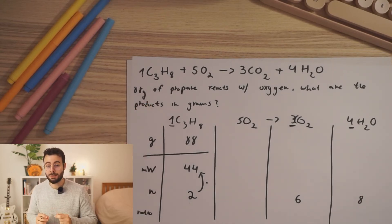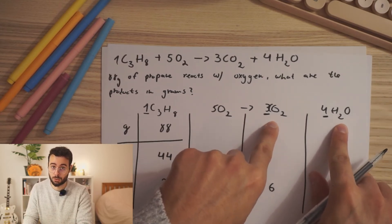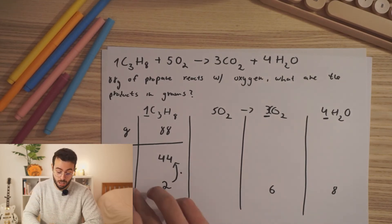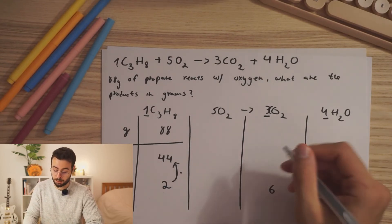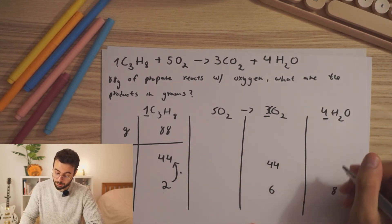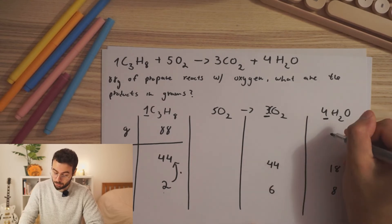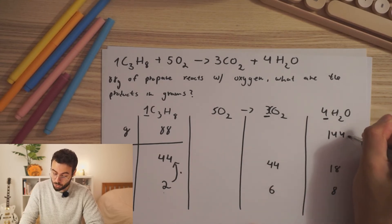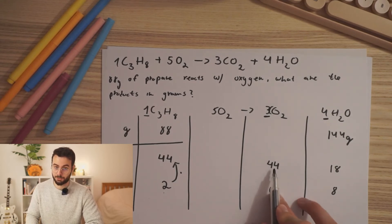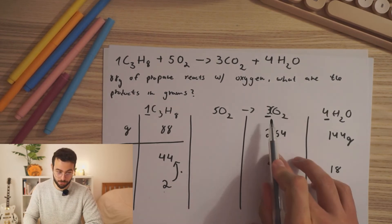It means that just by finding the molecular weight of these 2 molecules, you can easily go up the table and find the grams. Check this out. Molecular weight of carbon dioxide is 44. The molecular weight of water is 18. 8 times 18 will give us 144 grams of water. 6 times 44 will give us 264 grams of carbon dioxide.